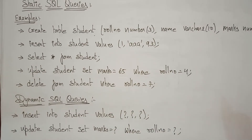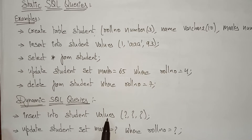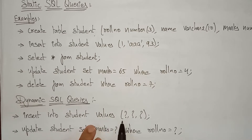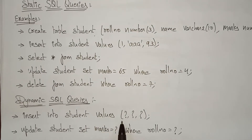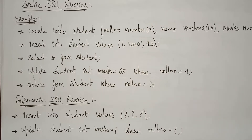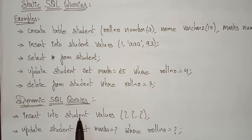Now we will work on dynamic SQL queries. With dynamic SQL, for example for an insert statement like 'insert into student values', you don't know what is being inserted because this is a dynamic strategy. So many people are online and they want to enter registration forms — you don't know what values they are giving. That's why we use a question mark: 'insert into student values (?, ?, ?)'.